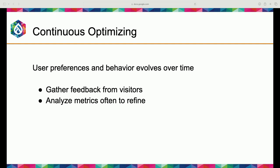Continuous optimization — user preferences and behavior evolve over time. Gather feedback from your visitors. So much of personalization is analysis and adjusting. Back up your results with data from multiple sources. Analyze metrics often to refine — just because something works for a while doesn't mean it always will. Don't rest on your wins; keep testing, keep refining.